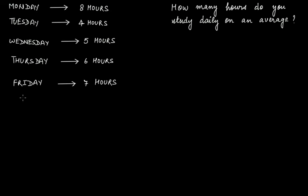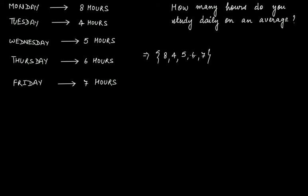Let's take one more example. Suppose on Monday, Tuesday, Wednesday, Thursday, and Friday you study — you rest on Saturday and Sunday. On Monday you study for eight hours, then four hours, then five hours, then six hours, then seven hours. Representing this as a data set: eight, four, five, six, seven. These values tell you about the studying hours on Monday, Tuesday, Wednesday, Thursday, and Friday respectively.